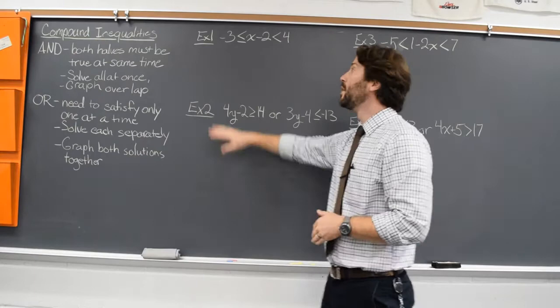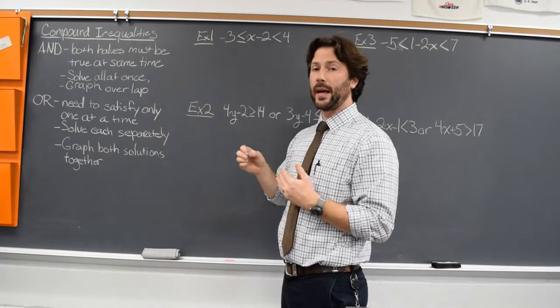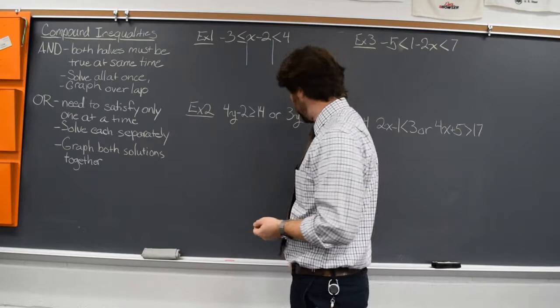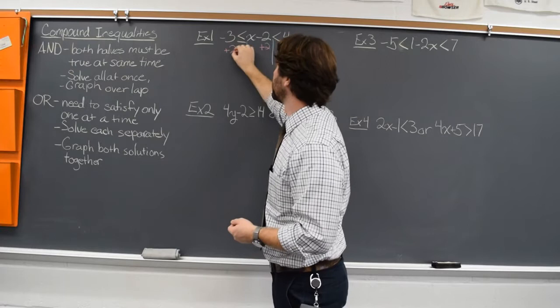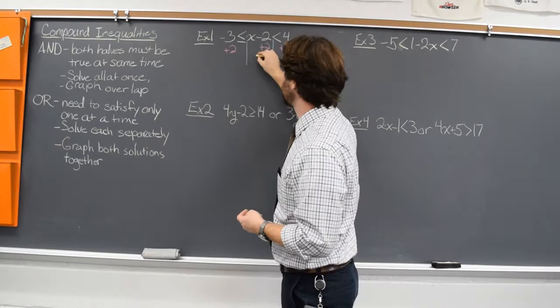So let's take a look at this one. From the top, same thing we always do — vertical line. Now this time, because there's two inequalities, we're going to draw two vertical lines. Now I want to get that x all the way by itself. They're subtracting two, so we'll add two to all three sides of this inequality. In the middle, minus two plus two cancels, and x is all by itself.